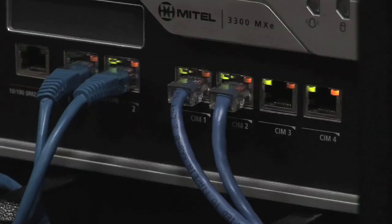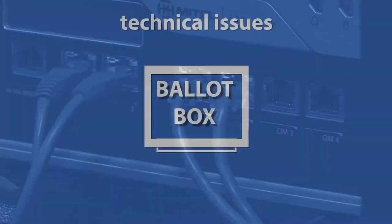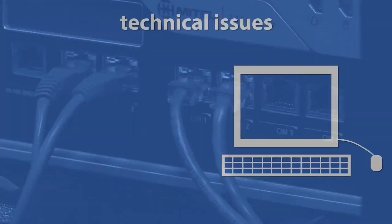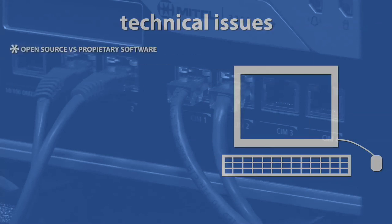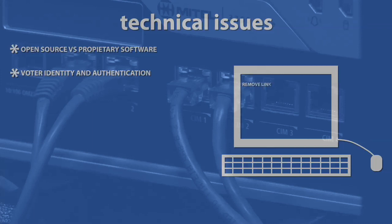There are also a number of technical issues to consider. For example, should the voting software being used be open source, making the source codes freely available? A secure username and password system must be in place so voters' identity can be authenticated. The electronic link between the voter and the vote must be removed at some stage to respect the secrecy of the ballot.